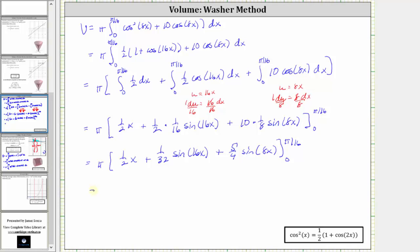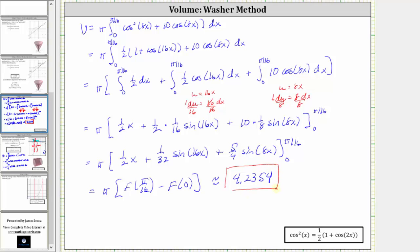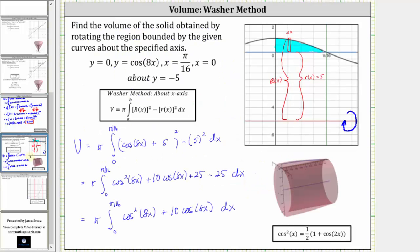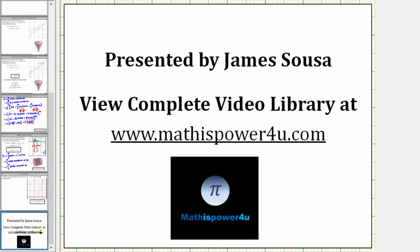Now we need to find pi times the difference of F of pi divided by 16 and F of zero. This comes out to approximately 4.2354, which gives us the volume of the solid when the bounded region is rotated about y equals negative five.